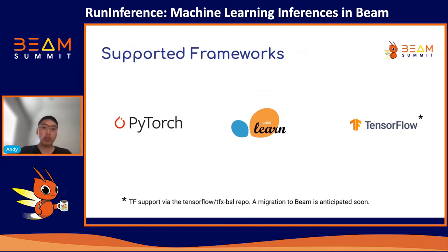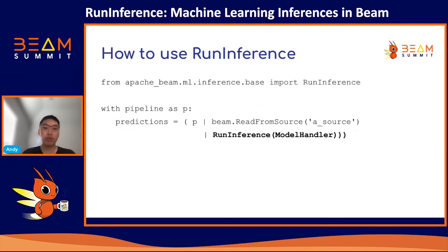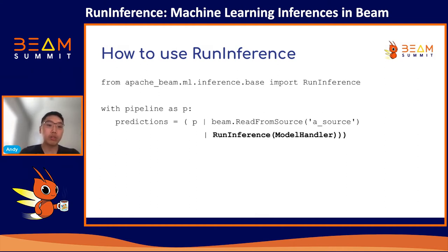We introduced Run Inference implementations for PyTorch and scikit-learn frameworks in Beam 2.40. TensorFlow users can technically already do this, but only through the TFX BSL repo, so we have an asterisk there, and we anticipate consolidation into the Beam repo soon. To use Run Inference, make sure you have version 2.40 or above and simply import Run Inference from apache_beam.ml.inference.base. Notice that you'll see something called the model handler object inside Run Inference, which I'll explain in the next slide.